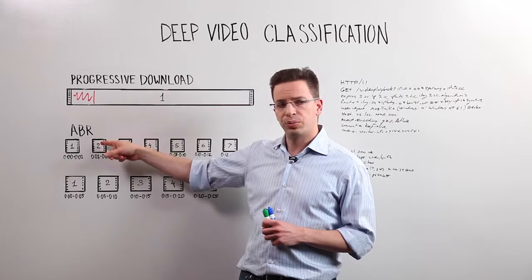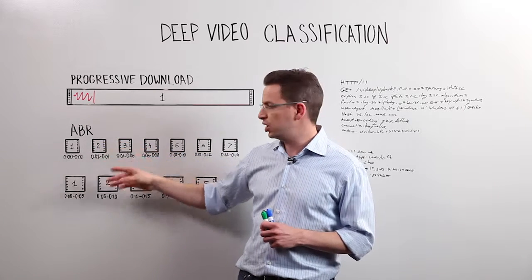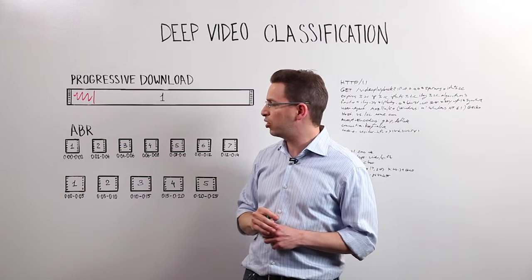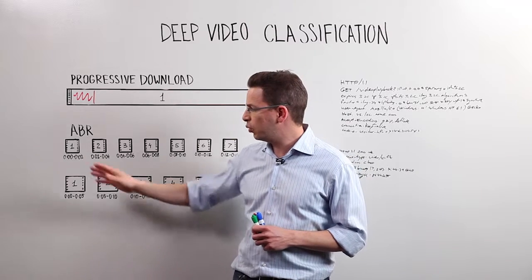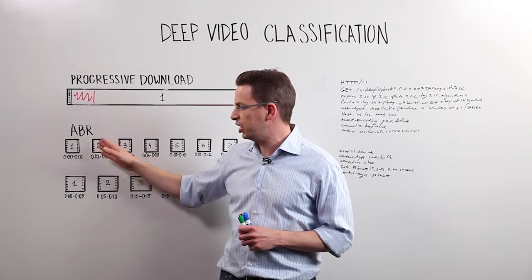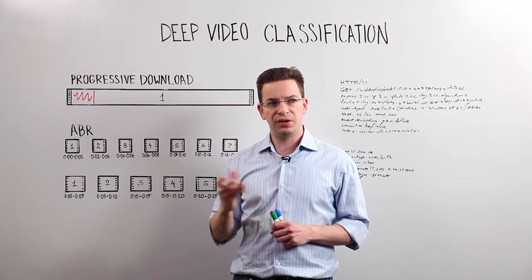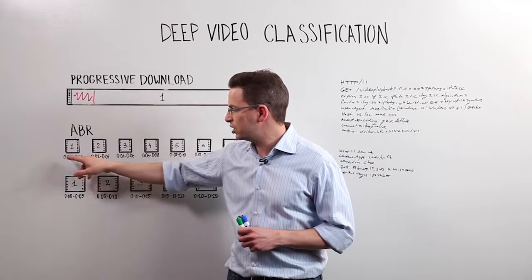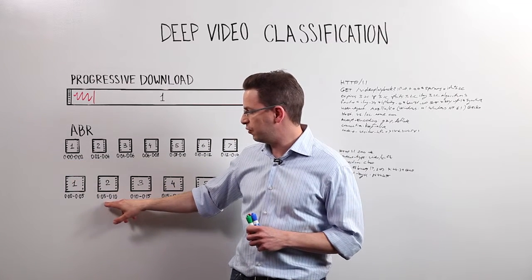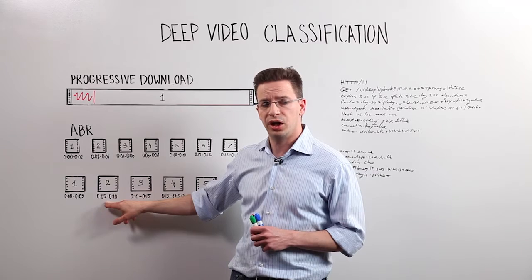If you were to try to perform a checksum calculation like you did in progressive download method, what would happen is that the cache would think that it's actually seeing different content types because this file is obviously different than this file even though they belong to the same video.